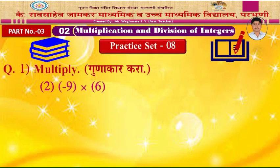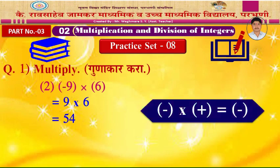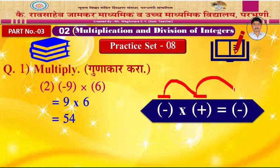Example 2: Minus 9 into 6. You may multiply without thinking about the sign — 9 into 6 is 54. But remember the rule: the first number is negative and the second is positive. When one is negative and one is positive, the product is also negative. So write the sign in the answer: negative 54.